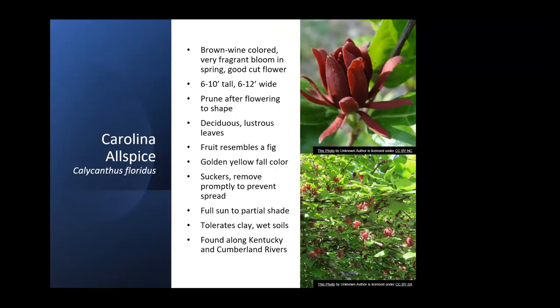Carolina allspice is another shrub nice to plant in a shrub border. It has really unusual flowers of a brown wine color that are very fragrant and can make a good cut flower. You can prune these to shape them. The fruit looks like a fig — it's an unusual-looking fruit — and they have decent golden yellow fall color. They do sucker some, so you have to remove those suckers. These are a western Kentucky plant found along the Kentucky and Cumberland Rivers.